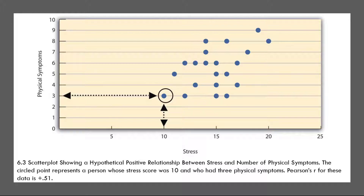A negative relationship is one in which higher scores on one variable tend to be associated with lower scores on the other — they move in opposite directions. There's a negative relationship between stress and immune system functioning, for example, because higher stress is associated with lower immune system functioning.